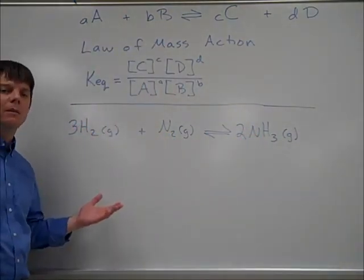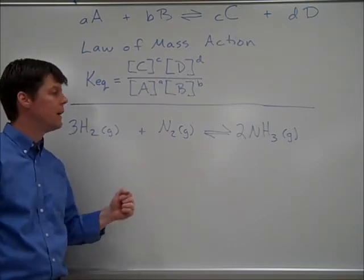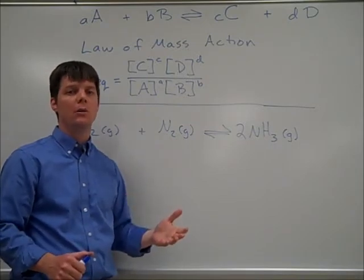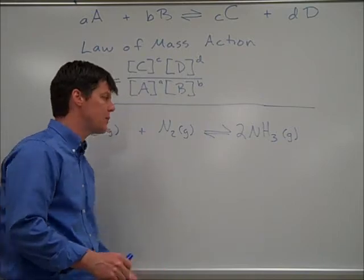We can see the balanced equation requires three moles of hydrogen to react with one mole of nitrogen, which will allow for the production of two moles of ammonia. So let's write the equilibrium expression for this process.